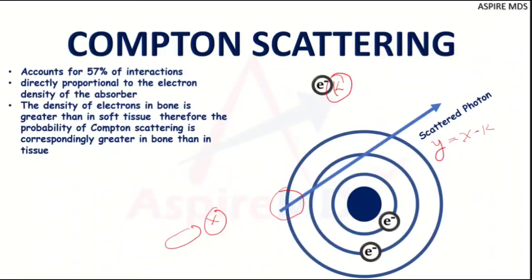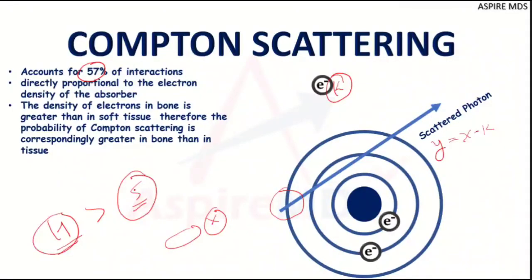Compton scattering accounts for 57 percent of these interactions and is directly proportional to the electron density of the absorber. So in hard tissue compared to soft tissue, the electron density will be greater in hard tissue, meaning Compton scattering will be more in hard tissue compared to soft tissue.